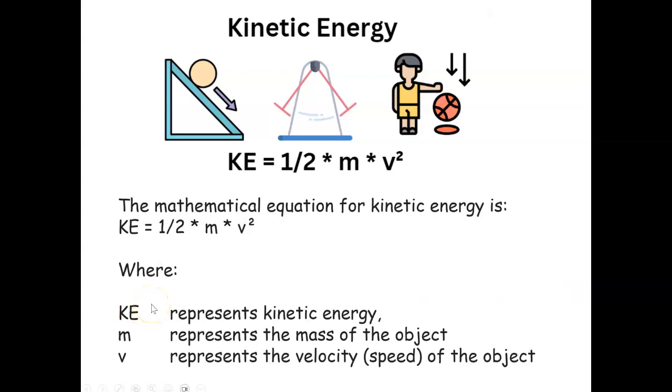In the mathematical formula, you have KE as the kinetic energy, m as the mass of the object, and v as the velocity.